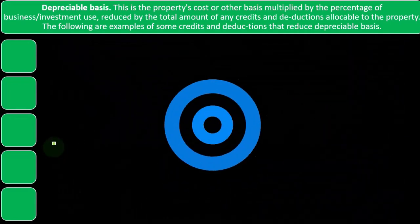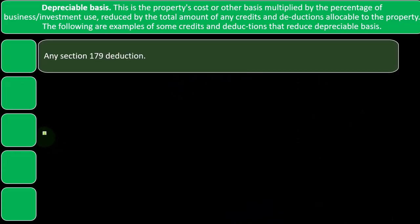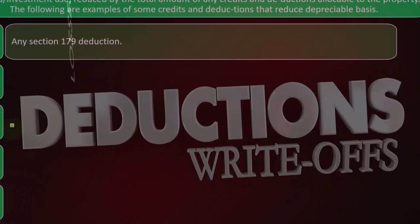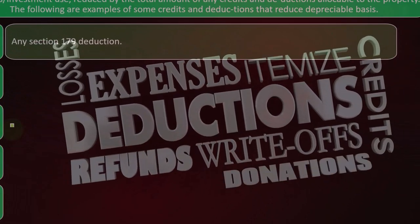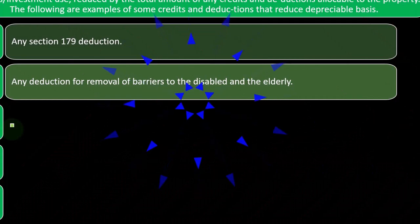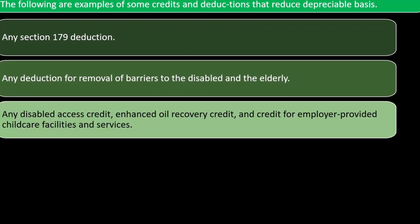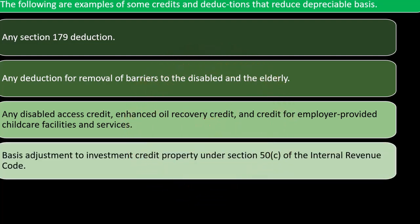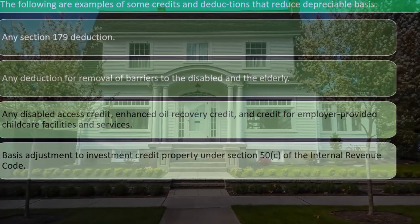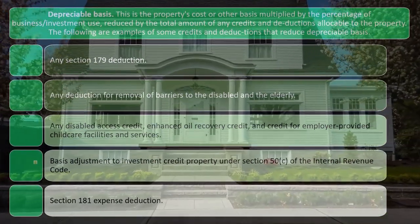Examples of credits and deductions that reduce depreciable basis include: any Section 179 deduction — which is another upfront type of deduction that adjusts the basis before applying the special depreciation allowance — any deduction for removal of barriers to the disabled and the elderly, any disabled access credit, enhanced oil recovery credit, credit for employer-provided childcare facilities and services, basis adjustments to investment credit property under Section 50(c) of the Internal Revenue Code, and the Section 181 expense deduction.